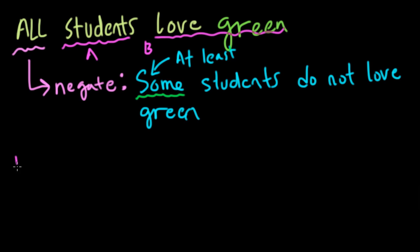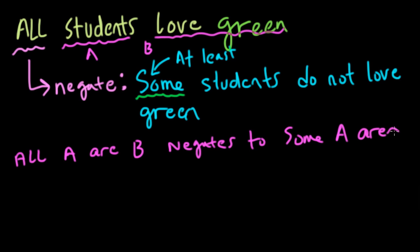So you can say in one sense you have your statement all A are B. In other words, all students love green. The negation, some A are not B. In other words, some students do not love green. And that's a negation.